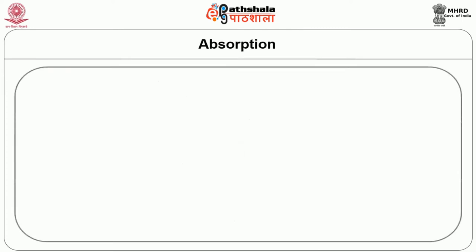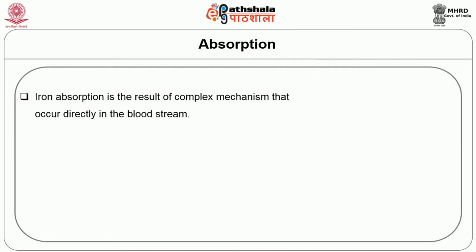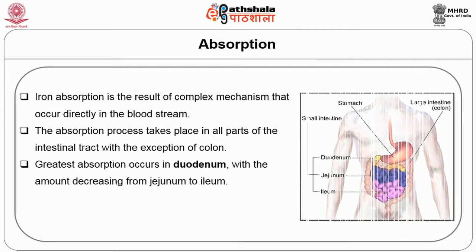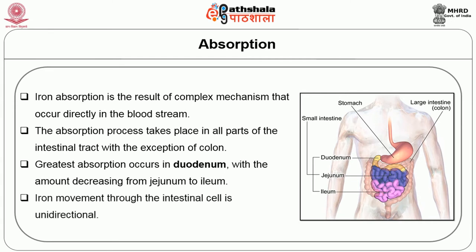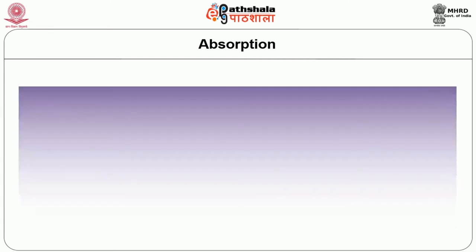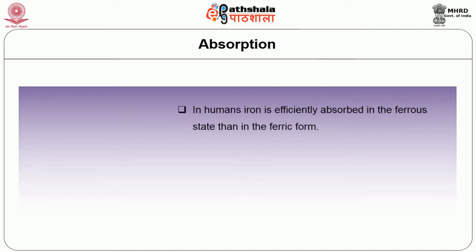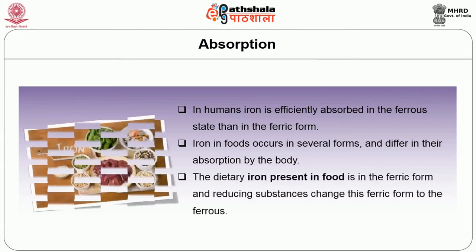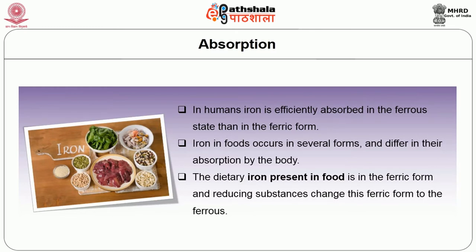Iron absorption is the result of a complex mechanism that occurs directly in the bloodstream. The absorption process takes place in all parts of the intestinal tract with the exception of the colon. Greatest absorption occurs in the duodenum, with the amount decreasing from jejunum to ileum. Iron movement through the intestinal cell is unidirectional. In humans, iron is more efficiently absorbed in the ferrous state than in the ferric form. The dietary iron present in food is in the ferric form, and reducing substances change this to the ferrous form.